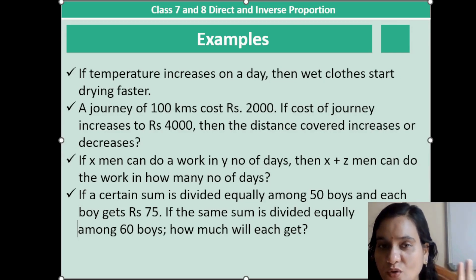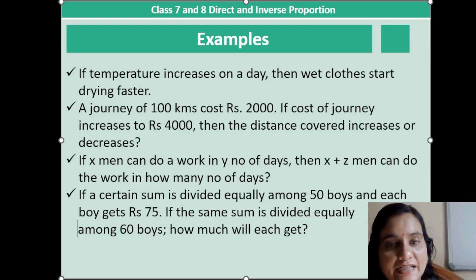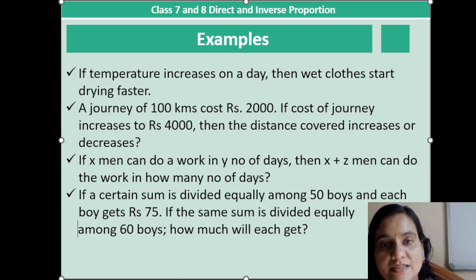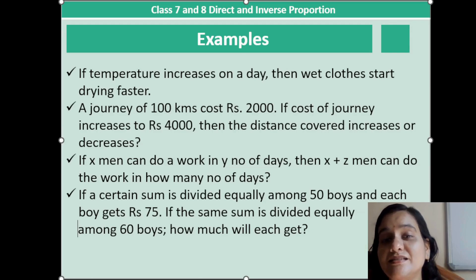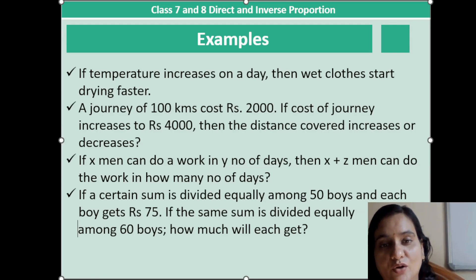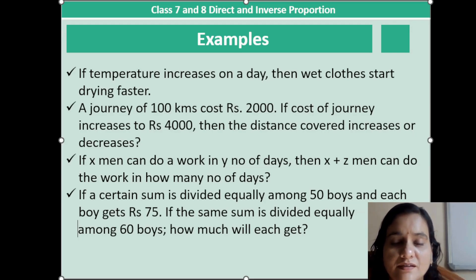So the first two examples set the tone for direct proportion or direct variation, whereas the next two examples illustrate inverse variation, where one quantity increases and the other goes down accordingly in the same proportion.